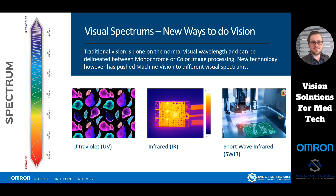Ultraviolet can be utilized as a way to see different bruises, for instance, on fruit that we could not see through normal light. As we look here, we can see some of these pears have different texture and bruising on them than what we can see normally.